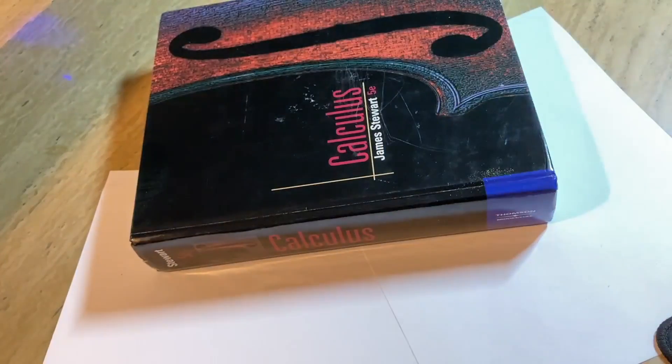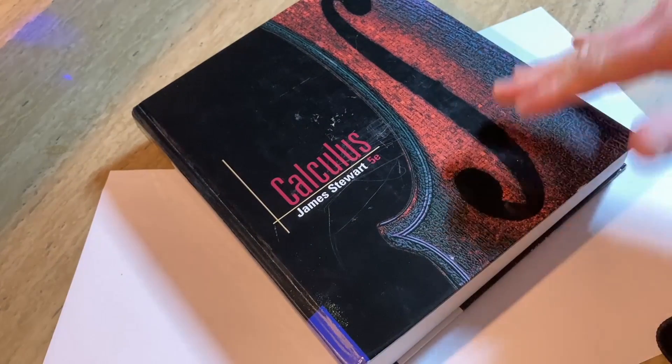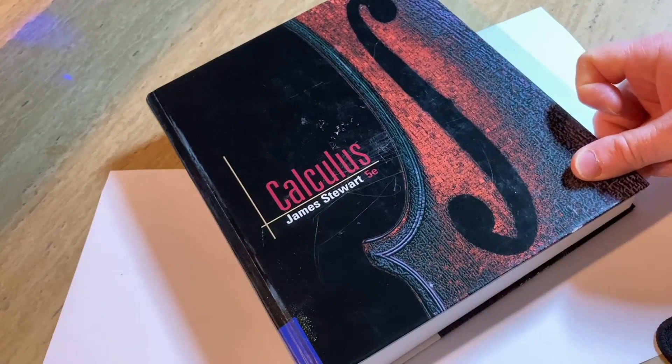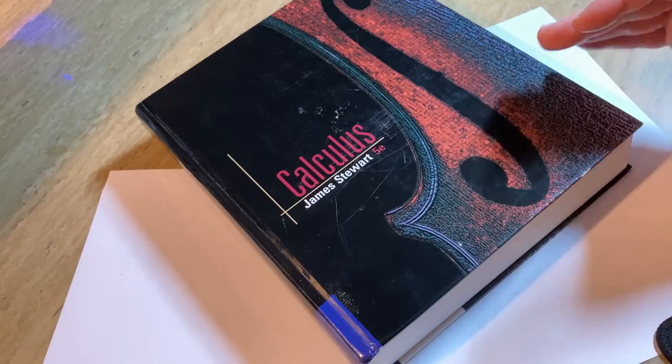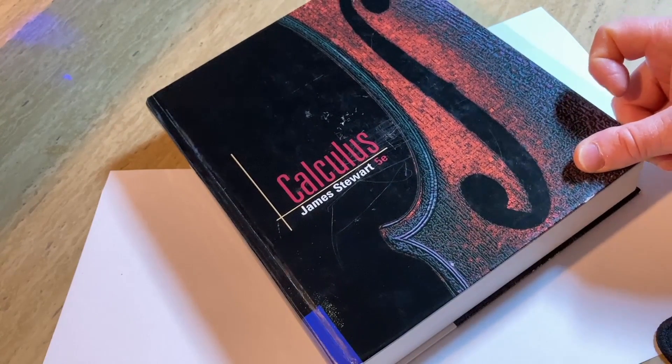And lastly, we have the super famous Calculus by James Stewart. There's this version. There's also the Early Transcendentals version, which I also own. Great book. I myself use the Early Transcendentals version for Calc 1, Calc 2, Calc 3.